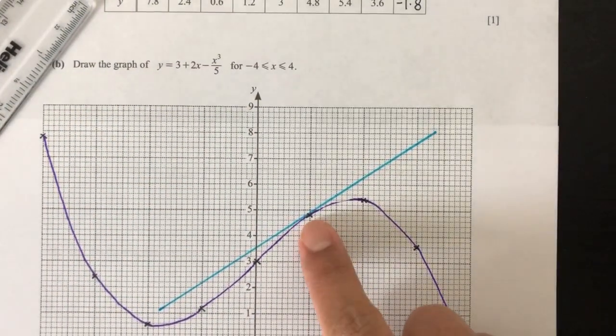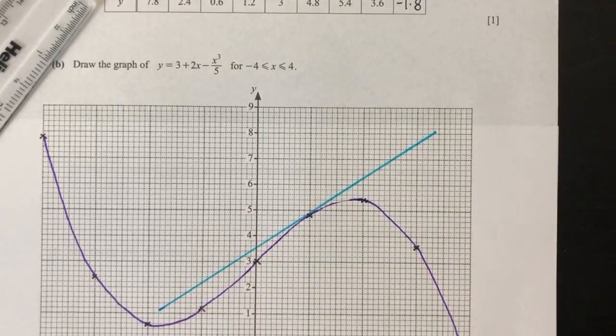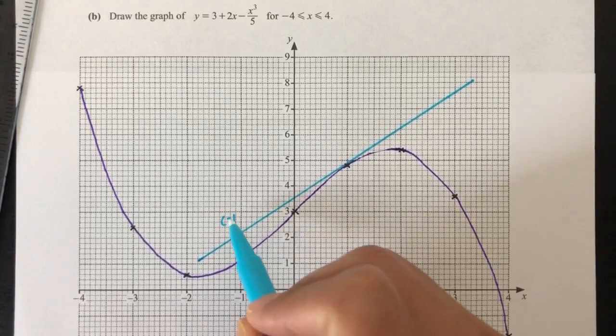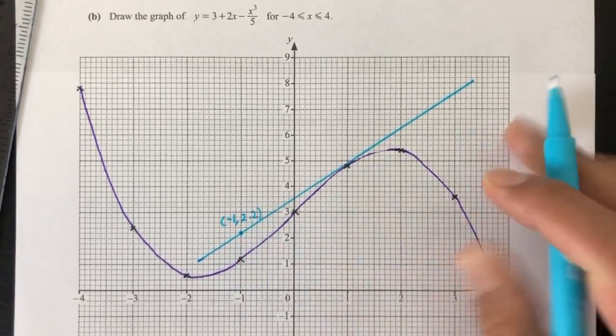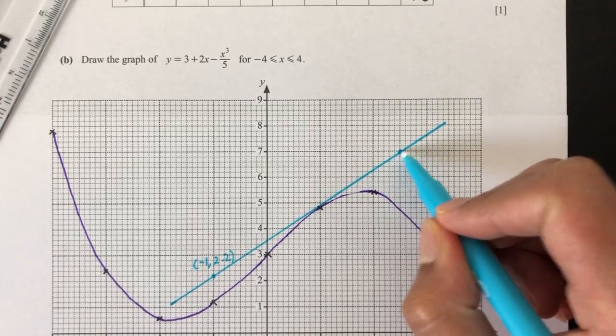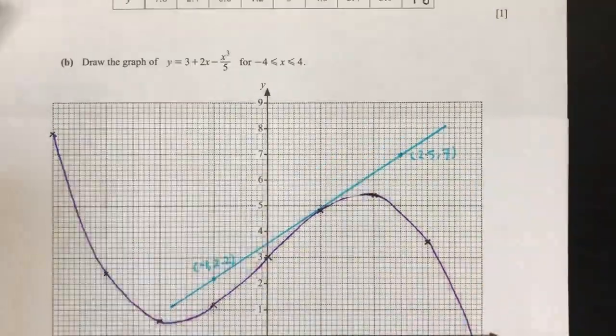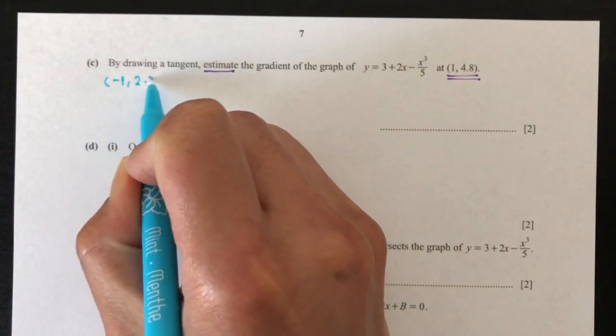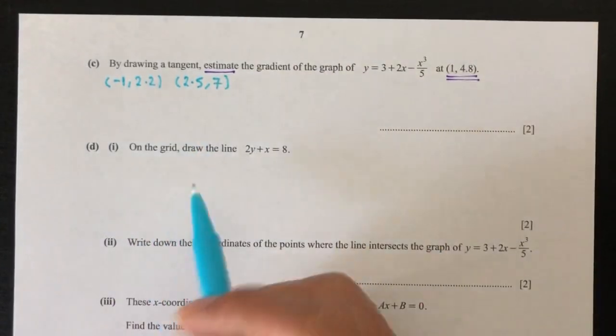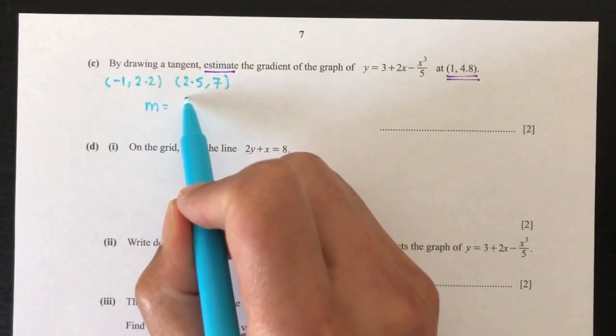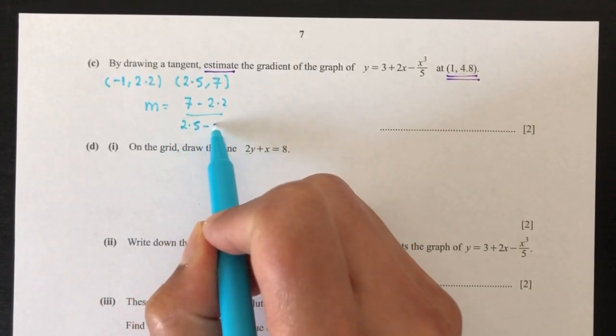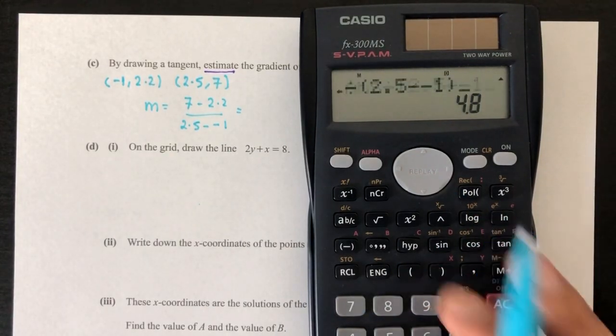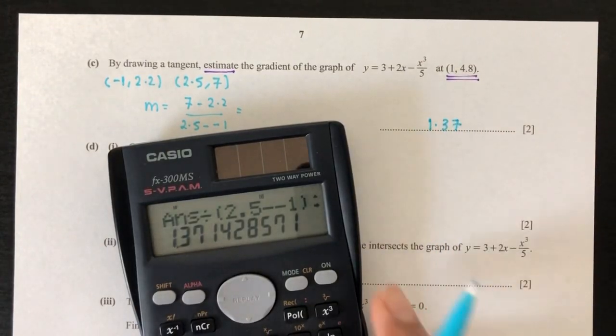Now you have to find one point on this side and one point on this side. You can choose any point that you like. I like to find the one that is convenient for me. So I will choose this one, which is to be minus one, and then 2.2. And then this one will be 2.5 and 7. So now I have two points. I can find my gradient pretty easily. To find the gradient, we just have to do y2 minus y1 and then x2 minus x1. 7 minus 2.2 divided by 2.5 minus minus 1. That will be 1.37 to 3 significant figures.